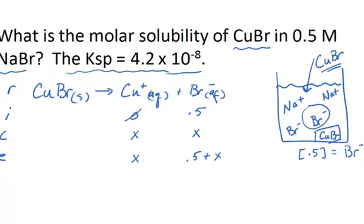So if we want to figure out the solubility of this particular compound, then we can write the ion product expression, and the ion product is that the Ksp 4.2 times 10 to the negative 8th equals the concentration of the copper ion at equilibrium, times the concentration of the bromide anion at equilibrium.